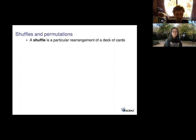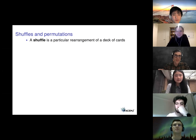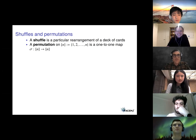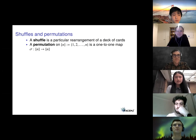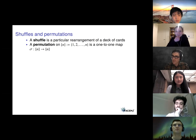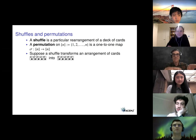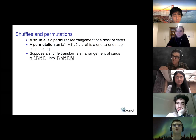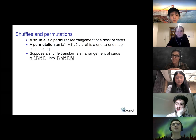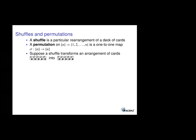We're going to model shuffles with permutations. A permutation on the first n integers is just a one-to-one map from the first n integers to the first n integers. For every given method of rearranging a deck of cards, we're going to try and associate it with a particular permutation — that's our first task. There's more than one natural way of doing that, but we'll just pick one and run with it.